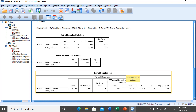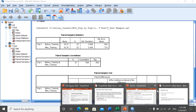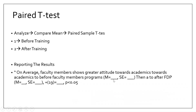Looking at the descriptive statistics: the mean before training is 28.35 and the mean after training is 23.35, and the significance value confirms the difference. When reporting, we write the mean score and standard error before and after training and state that H1 is accepted — there is a significant difference. This covers both the independent t-test and the paired t-test.